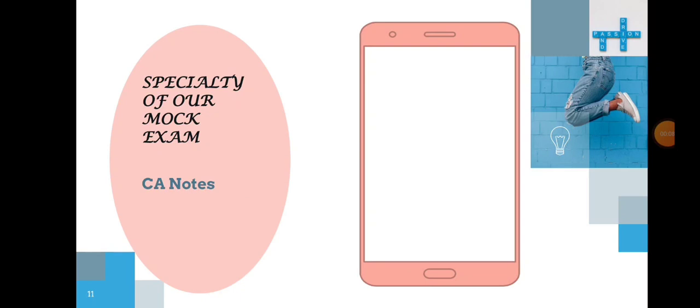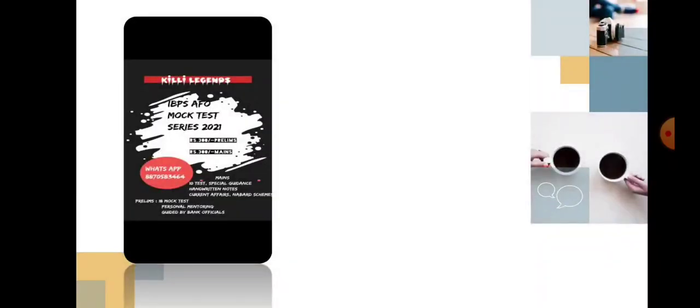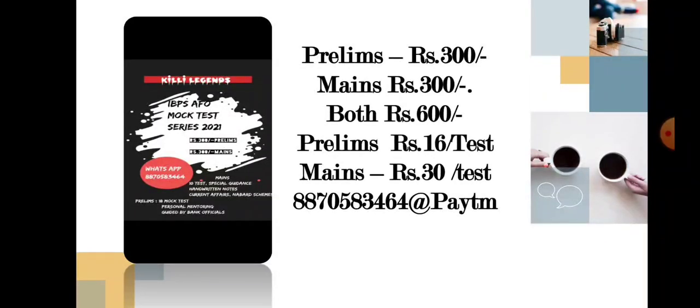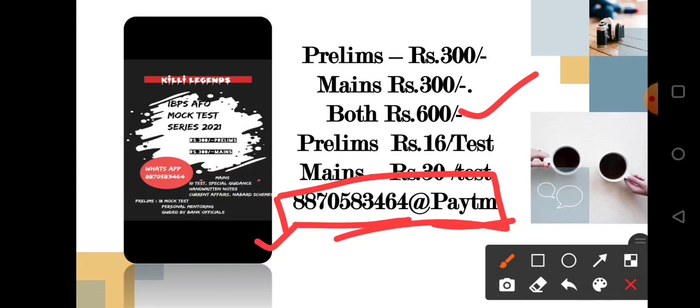At last, how to join our mock test series? You have to pay 300 rupees each for prelims and mains. You can join either prelims or mains or both - it's based on your wish. If you want both, you can pay 600 rupees. You can pay through Google Pay, PhonePe, or Paytm. The steps are simple: go to Google Pay or PhonePe, click UPI payment, type the number shown on the screen.